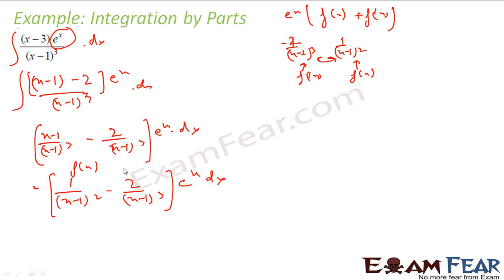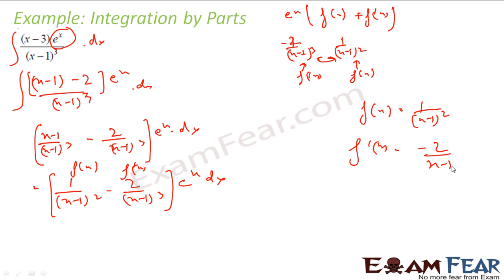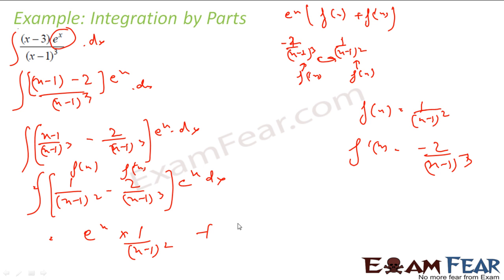Now if you take f(x) as 1/(x−1)², then f'(x) is −2/(x−1)³. So this guy is f(x) and this guy is f'(x), meaning the integral is e^x times f(x), that is e^x/(x−1)², plus a constant. I simply rearranged the expression so it equals the form f(x) + f'(x).